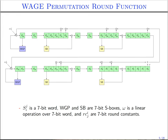A high-level overview of the round function of the WAGE permutation is shown here. It consists of 37 7-bit words shown in green, two WG permutation s-boxes shown in blue, five additional nonlinear s-boxes SB shown in yellow, two sets of round constants RC_i and RC_0, and the linear layer consisting of the primitive feedback polynomial and the omega multiplier.